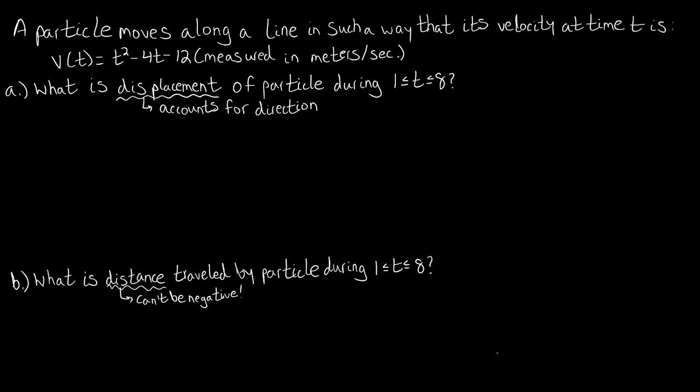In this video we're going to look at using net change. So a particle moves along a line in such a way that its velocity at time t is given by this velocity function: v of t equals this quadratic, measured in meters per second. The two questions we're asked are: what is the displacement of the particle during the interval one to eight, and what is the distance traveled during that same interval?